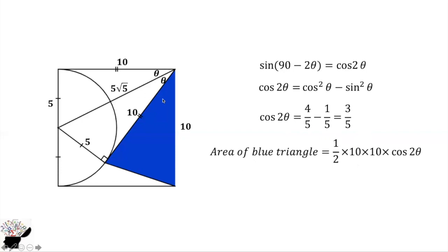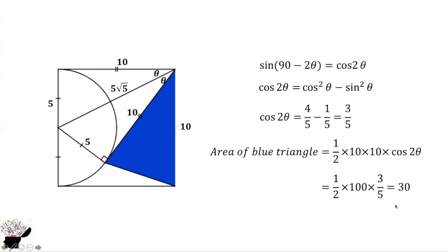Now we find the area of the blue triangle: half base times height. The base is 10 and the height is 10 times cos 2 theta. Since cos 2 theta equals sine of (90 minus 2 theta), we get one-half times 100 times 3/5, which equals 30.